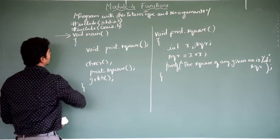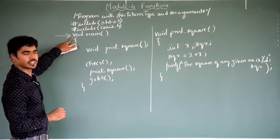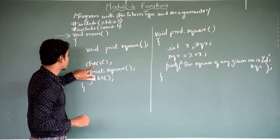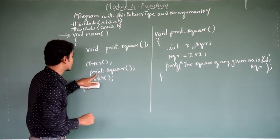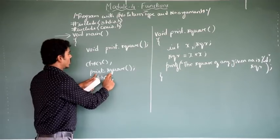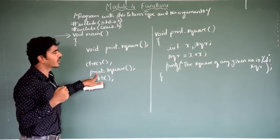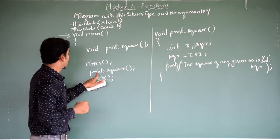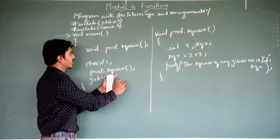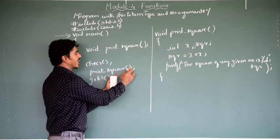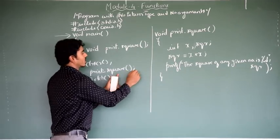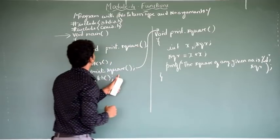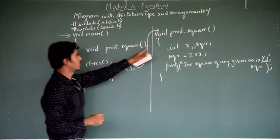As usual, when I execute the program, execution always starts from the main function. Then we have the function prototype, then clear the screen. This is the function call — 'printSquare' — a function call without passing any values. The control then gets transferred to the called program.